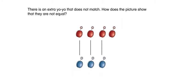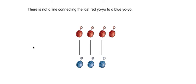How does the picture show that they are not equal? There is not a line connecting the last red yo-yo to a blue yo-yo.